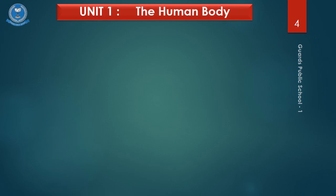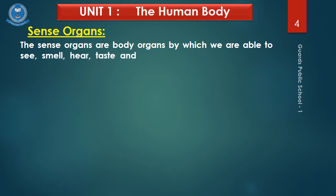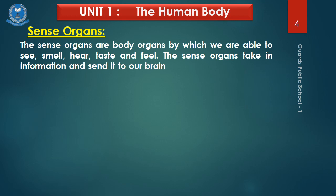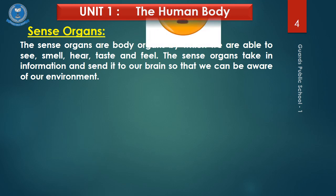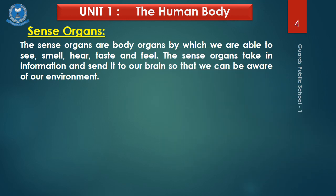Let's start with our first topic, the sense organs. The sense organs are body organs by which we are able to see, smell, hear, taste and feel. The sense organs take in information and send it to our brain so that we can be aware of our environment. When we use our sense organs, they inform our brain, and then our brain tells us what we are seeing, what we are listening, what we are smelling, what we are tasting, and what thing we are touching.